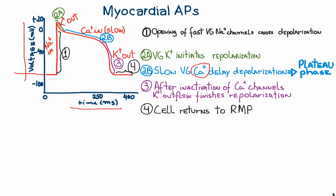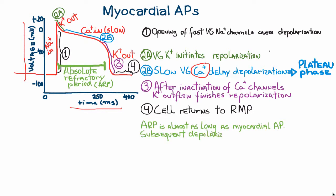We can add more to the myocardial action potential by discussing the absolute refractory period. This is the period the cell must go through before another action potential can be established. It's called absolute because no matter what you do to the cell during that time, no action potential will develop. The absolute refractory period is almost as long as the myocardial action potential itself, and subsequent depolarization is limited by this plateau phase.